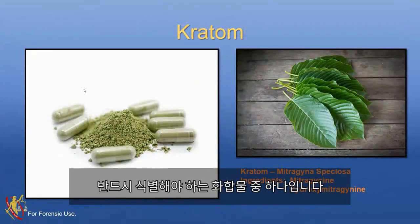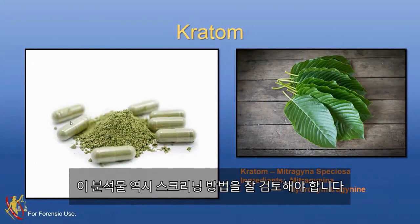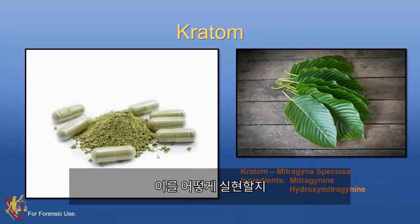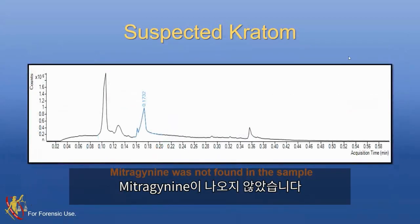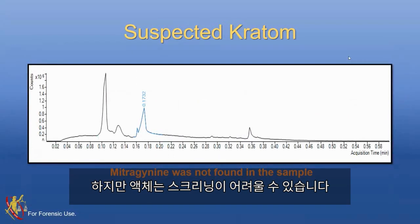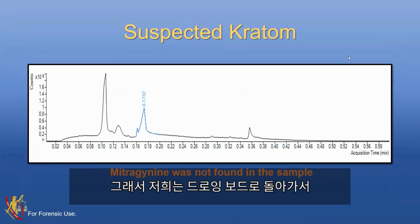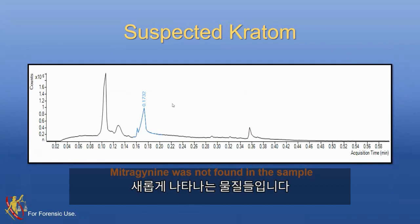Kratom is something we have to identify here in Alabama — we see it in capsule form and quite a bit in liquid form. We were really interested in seeing how the system performed on it. The mitragynine, which is the controlled compound in Alabama, just isn't at a high enough concentration in these samples to give us a match without extraction. So for suspected kratom samples, we found that we would have to extract them to identify the mitragynine. Every instrument has its pros and cons, so it's a matter of teasing the system out and finding a way to make it work.